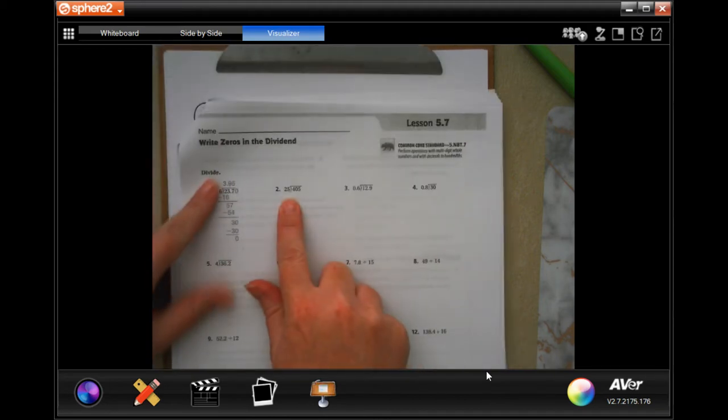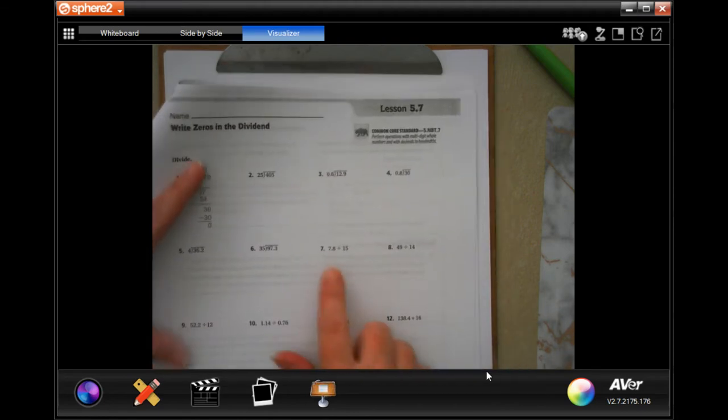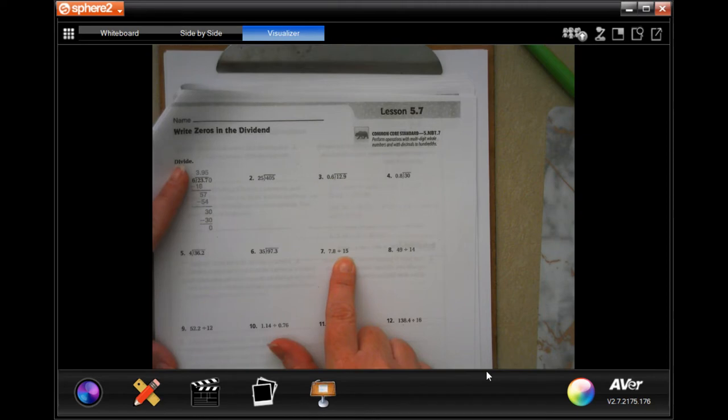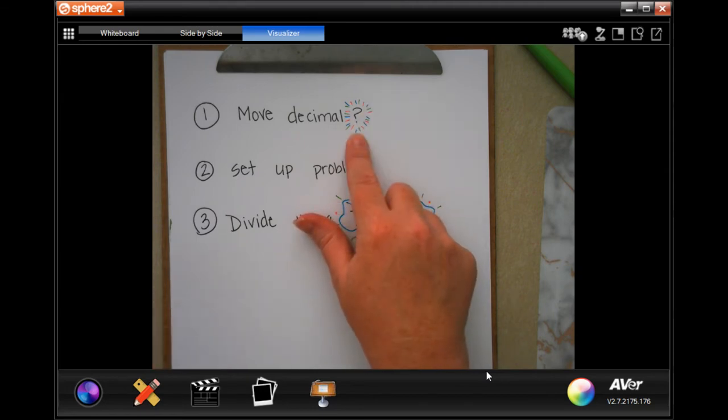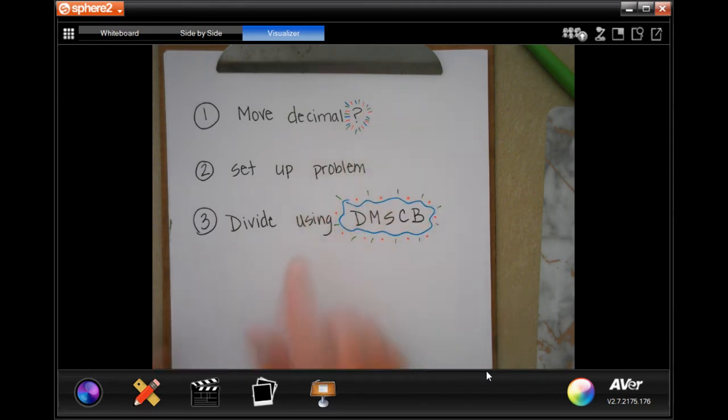You'll notice that not all of your problems have decimals at all. Some of them have a decimal on the outside and not the inside, so you have to do something about that. Some of them have them outside and inside. That's not move decimals, question mark, because if it doesn't have a decimal, you don't need to move one. Sometimes you don't have to move one at all, and sometimes you have to move it. Make sure that you're looking for that.